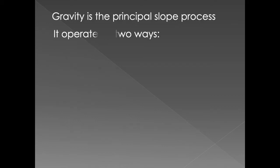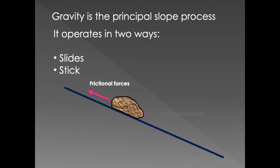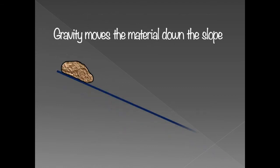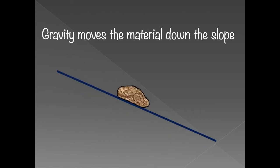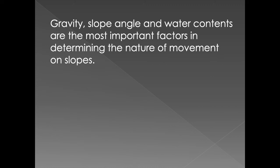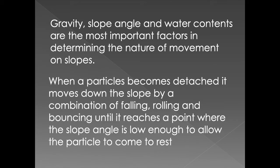What are the forces that play here? Gravity plays a role in two ways: slides and sticks. The frictional force goes in the opposite direction, a stick force keeping the material there, and then the slide component. Gravity moves material down by loosening it so it slides down the slope. The key factors causing slope processes are gravity, the slope angle, and the water content.